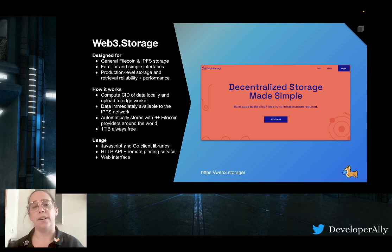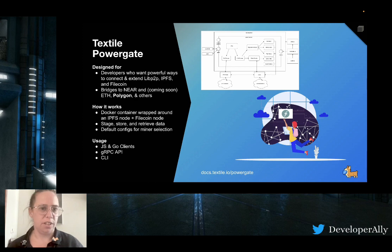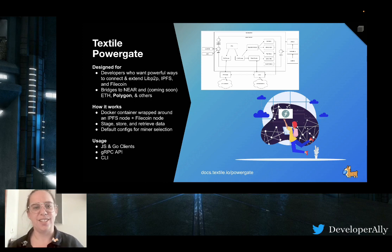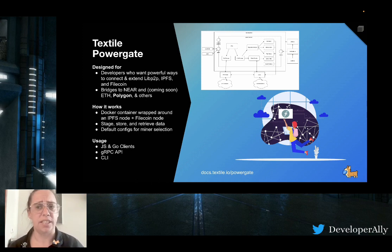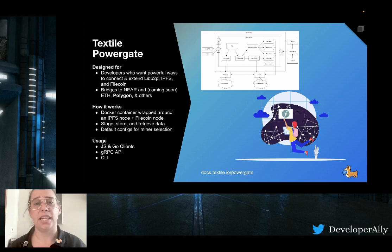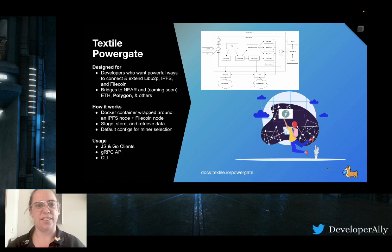If you want to do more with our underlying technology — if you're an advanced developer who wants to get into the nitty-gritty beyond those three dev tools — then Textile Powergate is a really good tool. It's a Docker container wrapped around the Filecoin and IPFS nodes, and it gives you a lot more options to configure, like miner selections, and extends the functionality of IPFS, Filecoin, and our other project, libp2p. Check that one out if you want to get a bit more advanced.